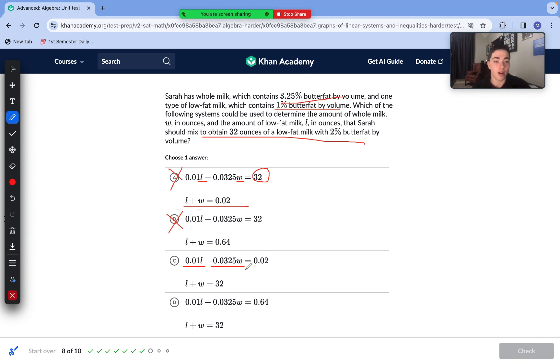Leaving D to be the only answer choice that actually makes sense. This is extremely important to understand because L and W represents the amount of ounces, and of course we're going to total to 32 ounces in total, which makes sense for our bottom equation. Then our top equation: 1% into a decimal 0.01, 3.25% as a decimal 0.0325. Of course, that matches. And to find 32 ounces of 2% butterfat, we need to multiply 32 times 0.02. That's where we obtain our 0.64. So answer choice D is correct here.